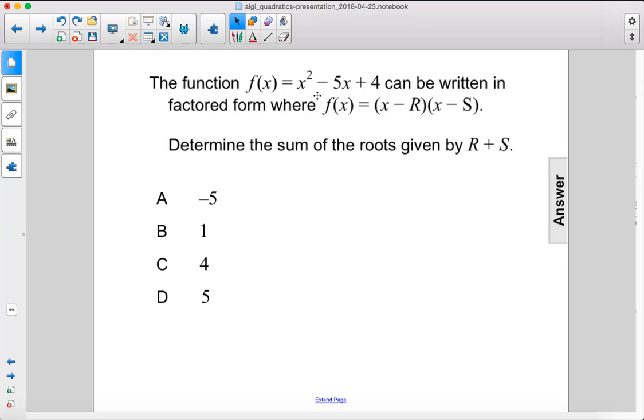The function f of x equals x squared minus 5x plus 4 can be written in factored form where f of x equals x minus r times x minus s. Determine the sum of the roots given by r plus s.